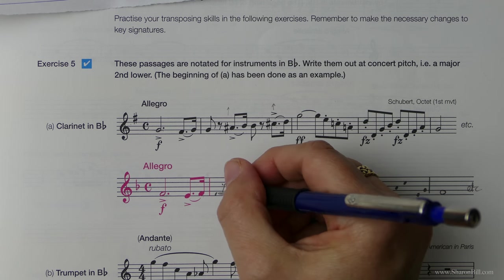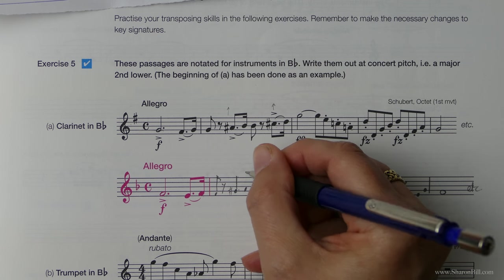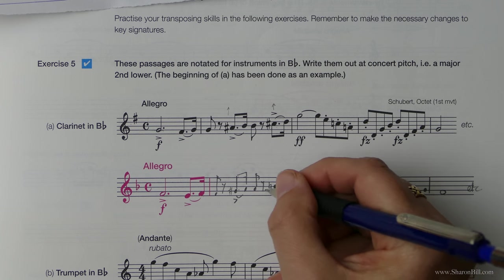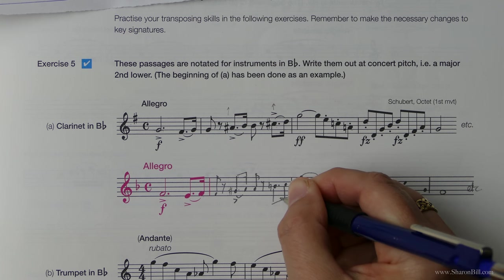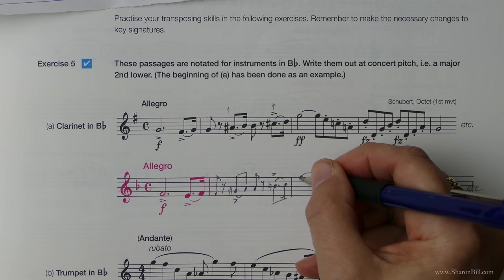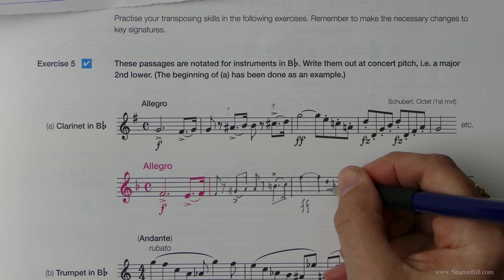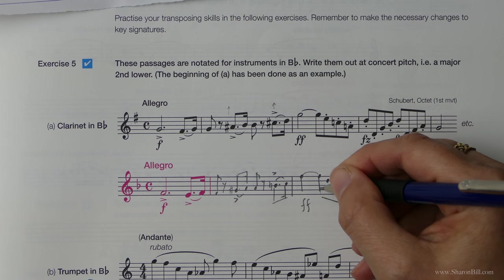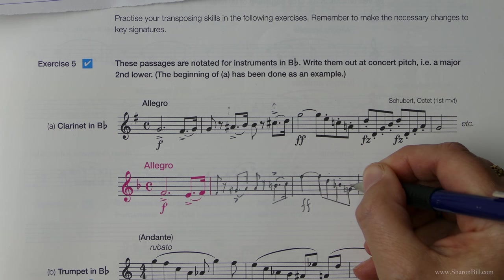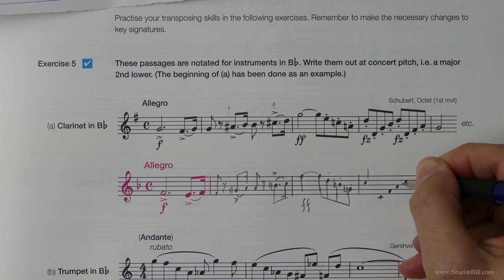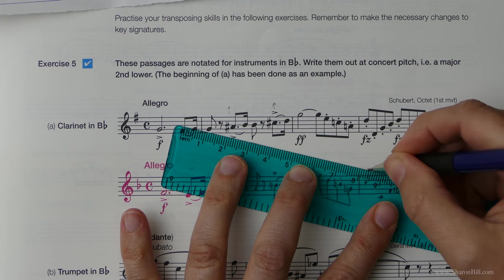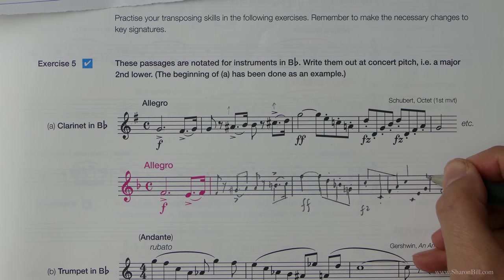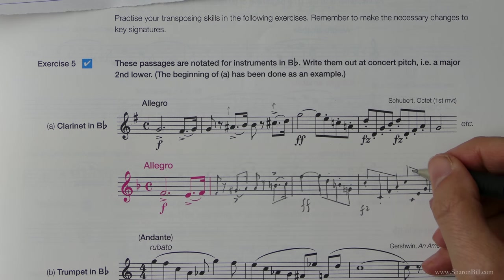So now we just need to add stems and articulation marks. Watch the direction of the stems because that might change. I'll just put all the articulation marks as I go along. You can do it in any order you like really. Use a ruler for this bit I think. So staccato marks there, just beam those, staccato marks, same again but we've done all the thinking now.